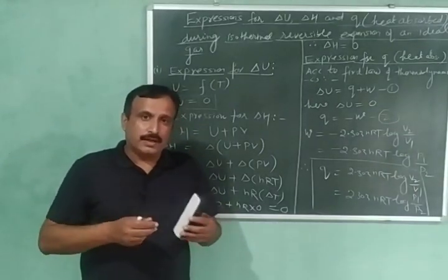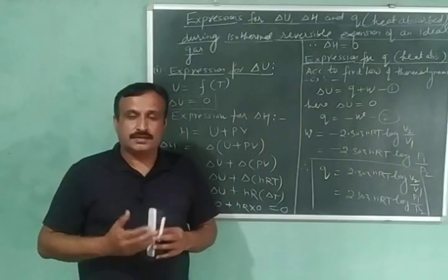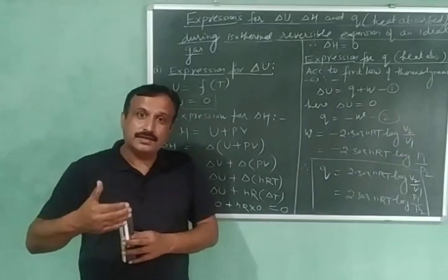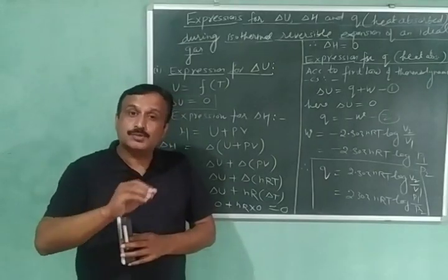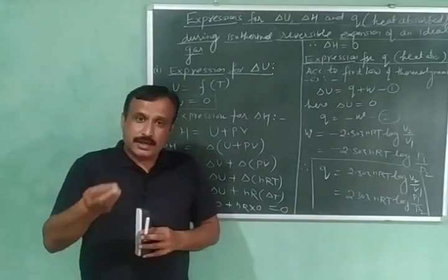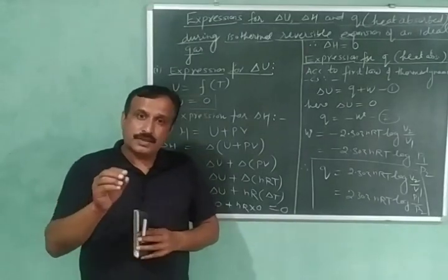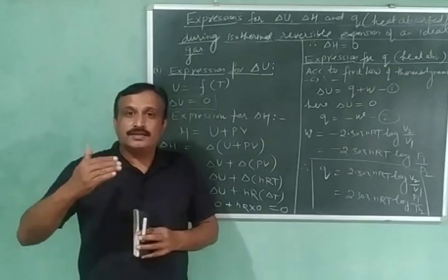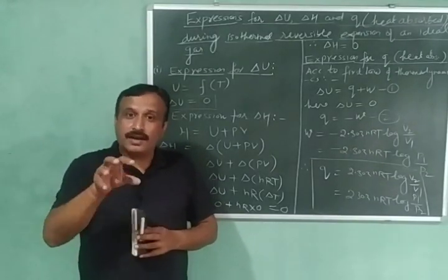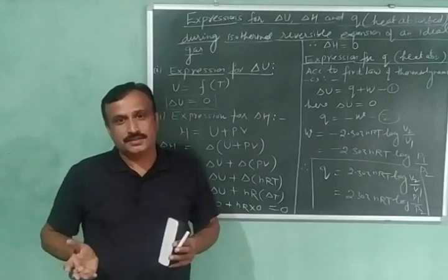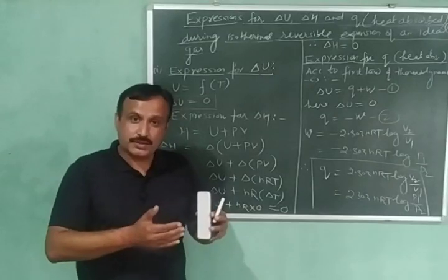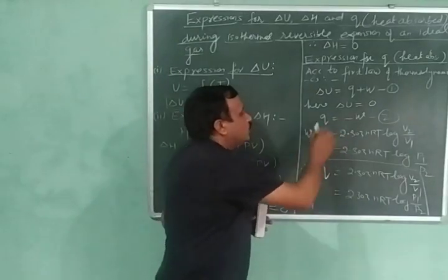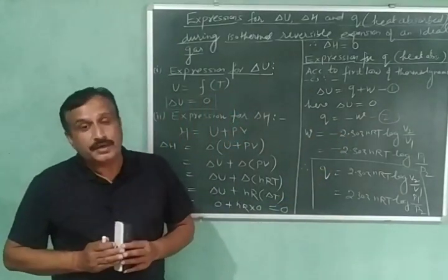In my previous video I explained that when gas expands it uses its own internal energy, and that decrease in internal energy is compensated by the supply of heat from the thermostat. This can also be interpreted as: the heat absorbed by the gas from the thermostat is completely converted into work, while the internal energy of the gas remains constant. That is why Q is equal to minus W.